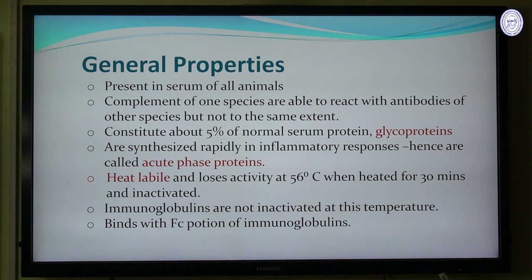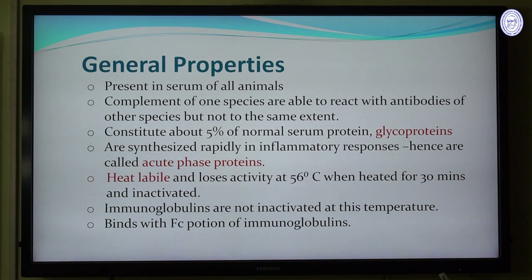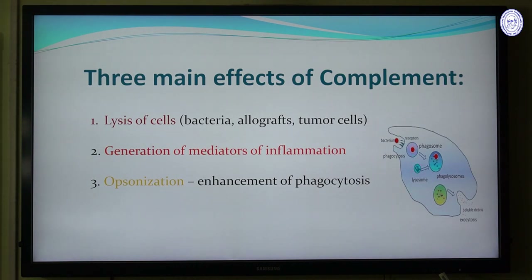Complement proteins are heat labile, meaning they can be broken down when heated to a certain temperature. For example, if heated at 56 degrees Celsius for 30 minutes, these proteins will be inactivated and degraded. Immunoglobulins, in contrast, are not inactivated at this temperature. These complement proteins bind to the Fc portion of immunoglobulins — the Fc portion is where the complement proteins bind.